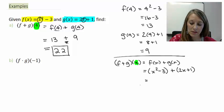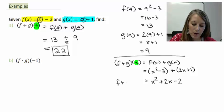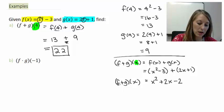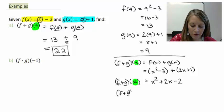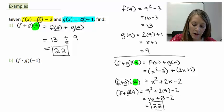Let me simplify this. I can drop the parentheses since they're not necessary, and combine like terms: x squared plus 2x, then the constant terms minus 3 plus 1 gives minus 2. So f plus g of x equals x squared plus 2x minus 2. Now if I want it at 4, I substitute 4 for x: 4 squared plus 2 times 4 minus 2 equals 16 plus 8 minus 2, or 24 minus 2, which gives the same answer of 22.